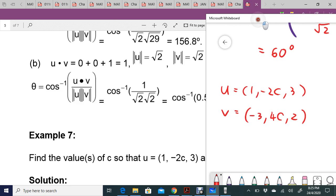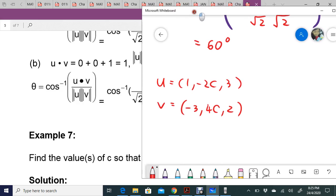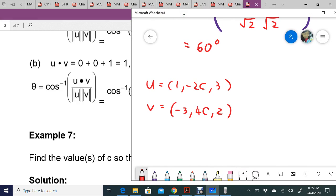So you already know that orthogonal means u dot v equals zero, right? So you just have u dot v first, and you will have zero.